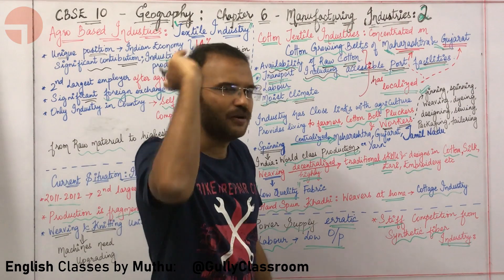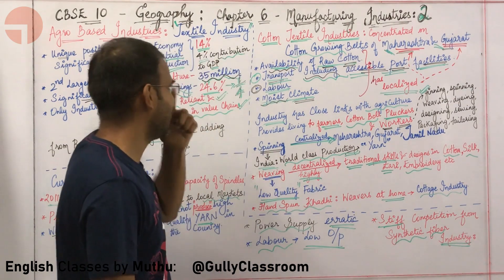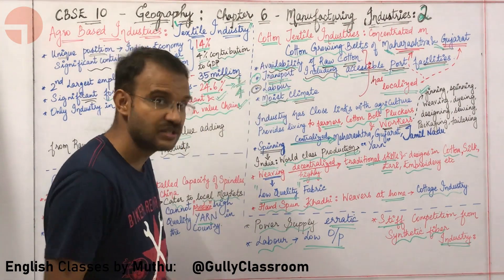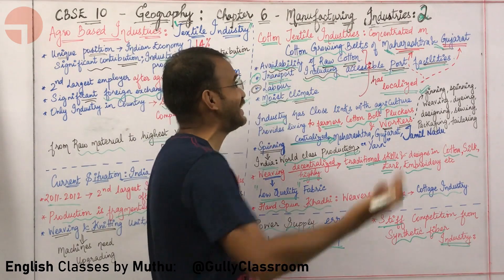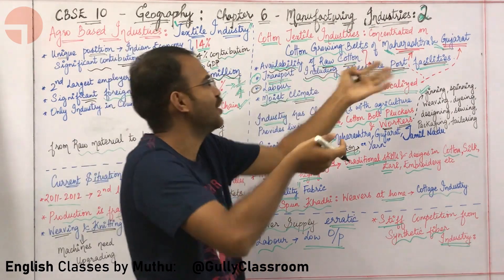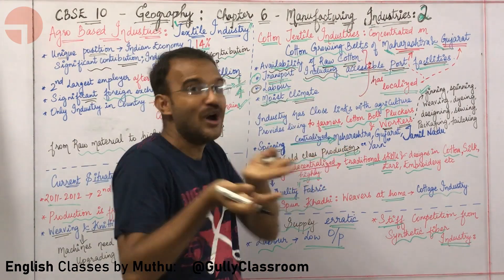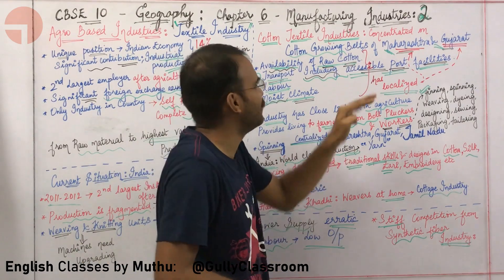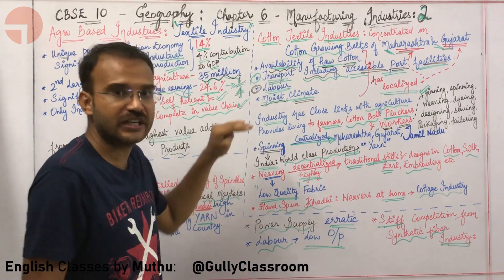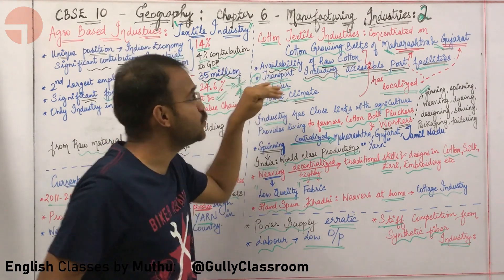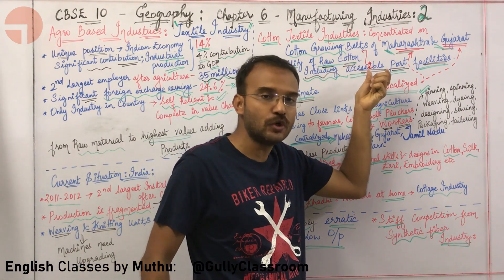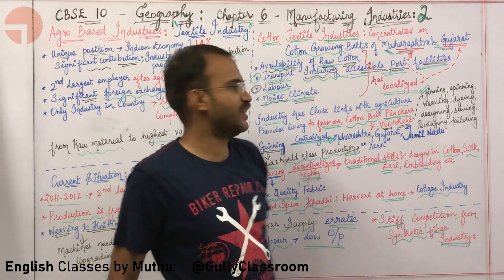So those are the four major reasons why cotton textile industries are concentrated in the cotton-growing belts of Maharashtra and Gujarat: availability of raw cotton, moist climate, labor, and transport including accessibility to port facilities.